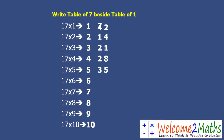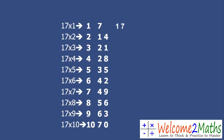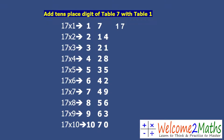The table of 7 goes: 7×1=7, 7×2=14, 7×3=21, 7×4=28, 7×5=35, 7×6=42, 7×7=49, 7×8=56, 7×9=63, 7×10=70. Now, what you have to do is add the tens digit of the table of 7 with the corresponding number in the table of 1.